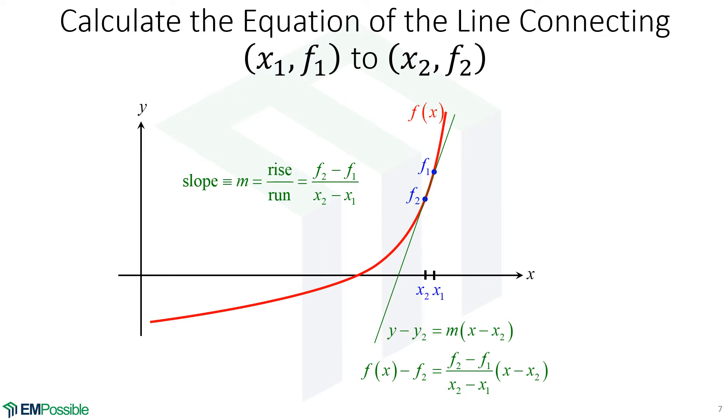So what is the slope? Well, slope is rise over run. So the rise, we're going from f2 to f1. So we'll put in f2 minus f1. And then the run, we're going from x2 to x1 or x1 to x2. So the run is x2 minus x1. And so that's our slope.